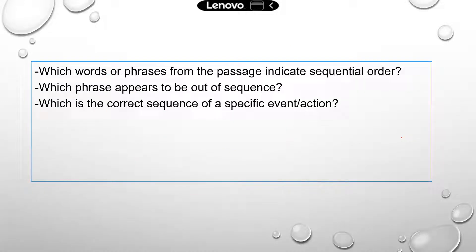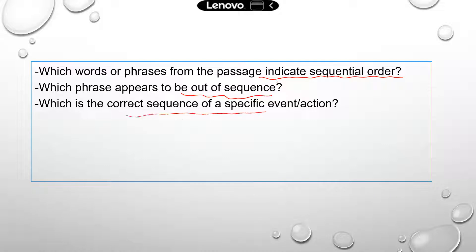Here are some of the common questions that you may see. For example: which words or phrases from the passage indicate sequential order? Which phrase appears to be out of sequence? Which is the correct sequence of a specific event or action mentioned in the paragraph? Of course, those questions may be a little bit different on the actual test — things may be more specific about the details in the paragraph.